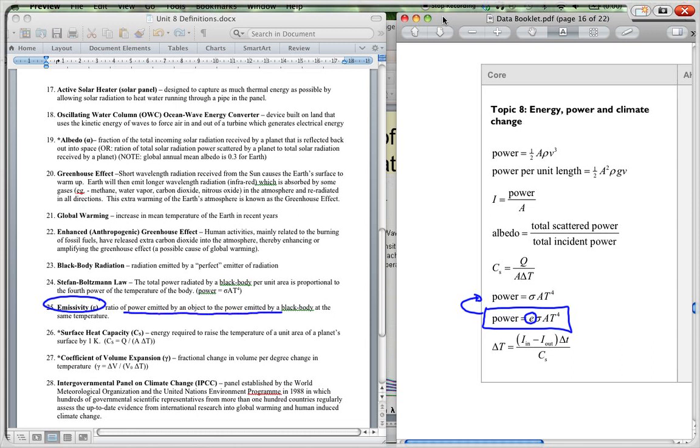It's the ratio of the power emitted by an object to the power emitted by a black body at the same temperature. So it's a ratio. E can be from zero to one where one would be black body radiation.